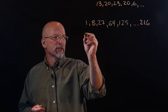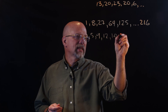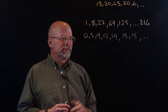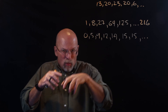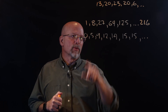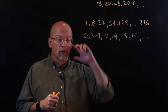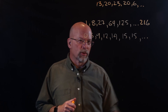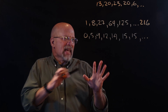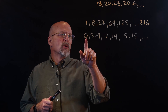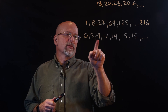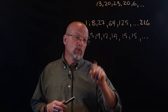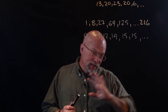How about zero, five, nine, twelve, fourteen, fifteen, fifteen? That's an odd one. This sequence is doing addition, not multiplication. The difference between zero and five is five, five to nine is four, nine to twelve is three, twelve to fourteen is two, fourteen to fifteen is one, fifteen to fifteen is zero.